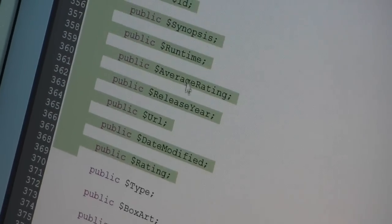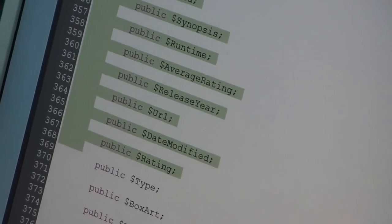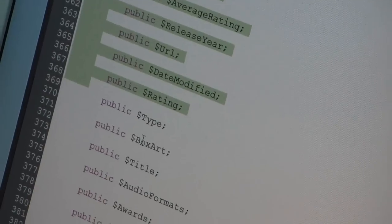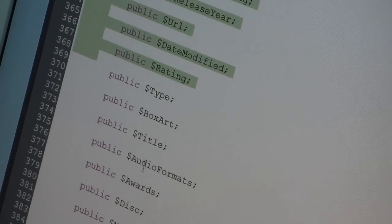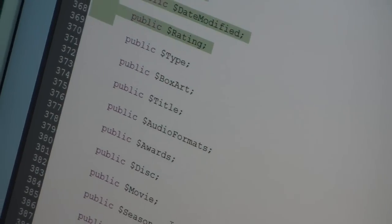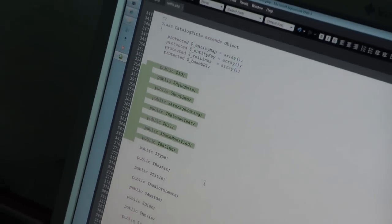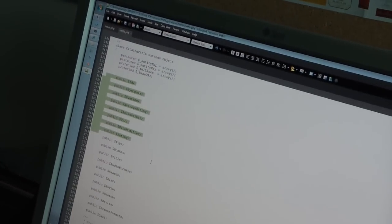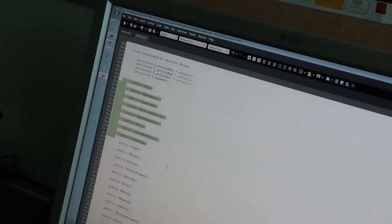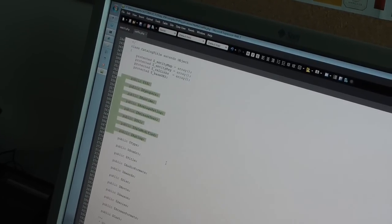In this case, I have the average ratings, I have the rating, I have the box art that is actually the picture that you see. I can see the title, available formats, and so on. Those are all things that are basically built by the command line tool in order to make it easier for me, a PHP developer, to write code on the client side.